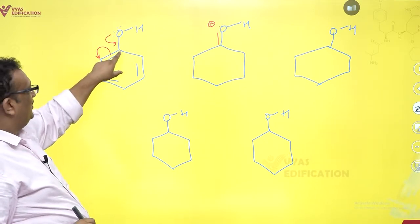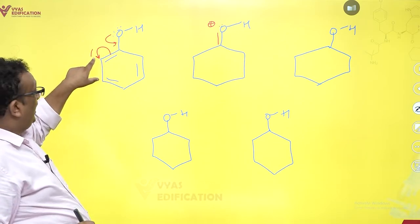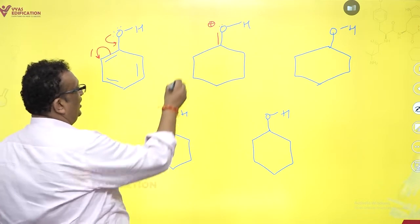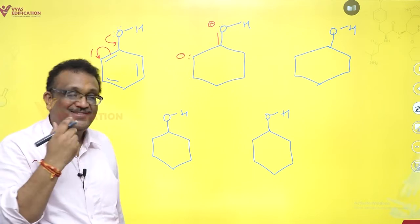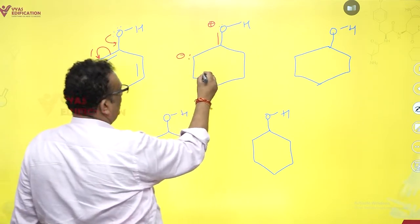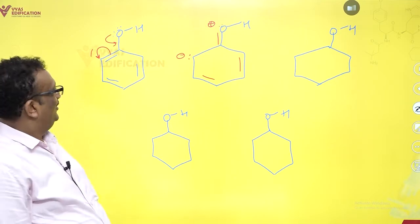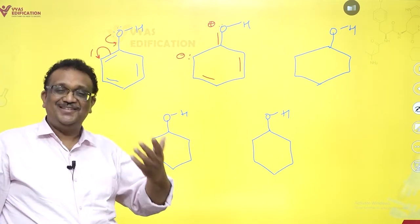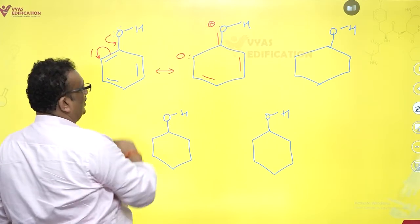The arrow must end at the corner because this is where the lone pair has to come. Oh my god, that way, yes. What about these two? These two are not changed; they just remain as they are. This is curved arrow notation. Yes, this is curved arrow notation and this is how we do the delocalization.